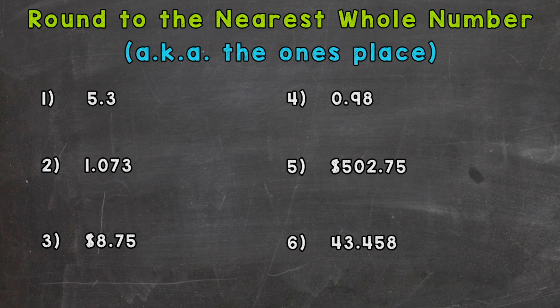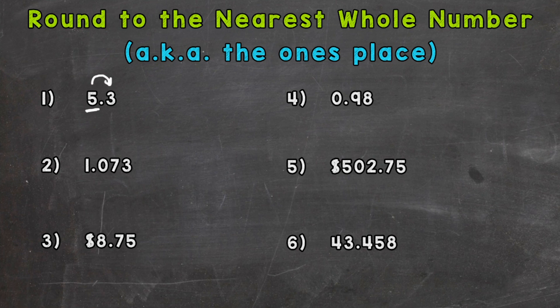Let's jump right into number one where we have five and three tenths. For all of these we're going to round to the nearest whole, which is the ones place. I'm going to start by underlining the digit in the ones place, then look next door to see if we round up or stay the same. Essentially, is five and three tenths closer to five or the next nearest whole number, six? We underline the ones place and look next door: five or more we raise the score and round up; four or less we let it rest and the number stays the same.